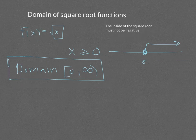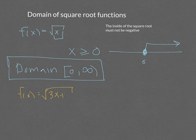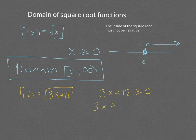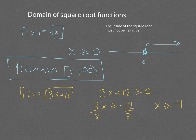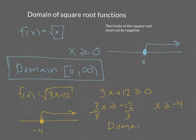For f(x) equals the square root of 3x plus 12, the inside 3x plus 12 must be greater than or equal to zero. Solving that gives 3x is greater than or equal to negative 12, and dividing both sides by 3 gives x is greater than or equal to negative 4. On a number line, all values are greater than or equal to negative 4, so the domain is negative 4 to infinity.